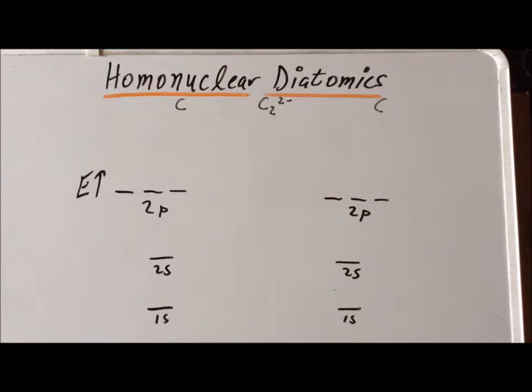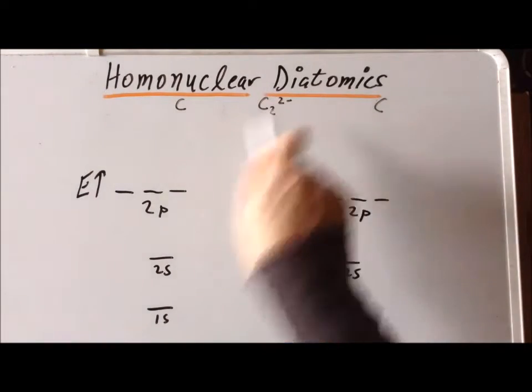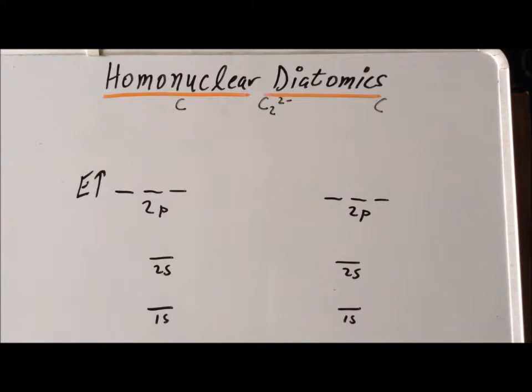Our first victim will be C2 with a 2- charge. In inorganic chemistry, this ion is referred to as carbide. In organic chemistry, it is referred to as the acetylide ion.